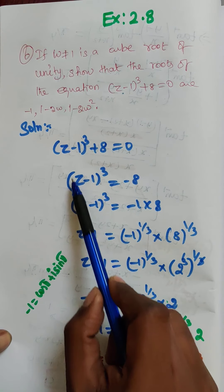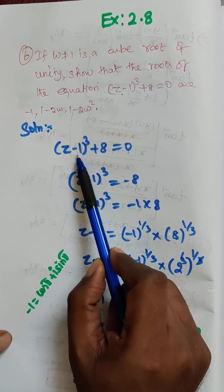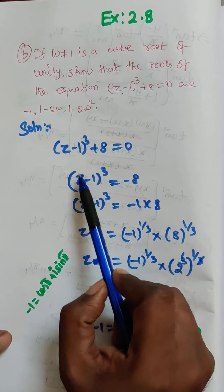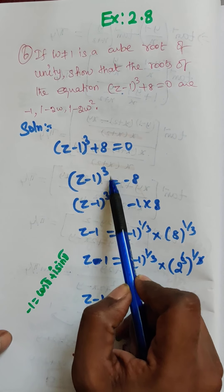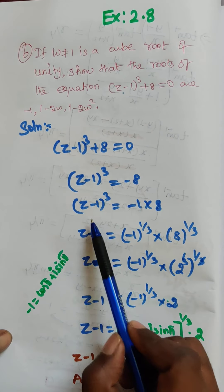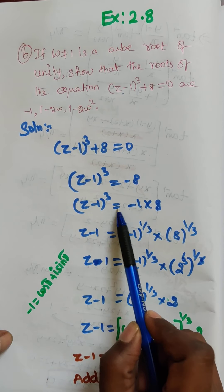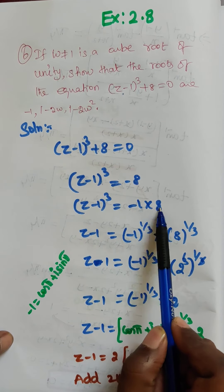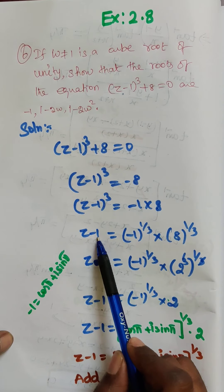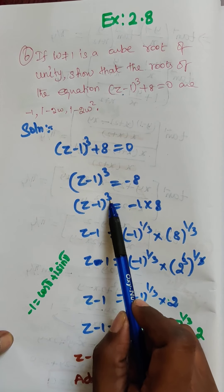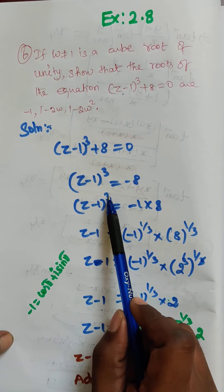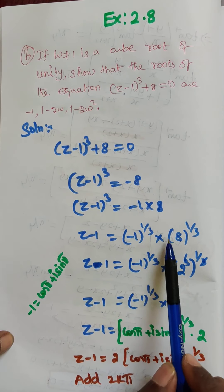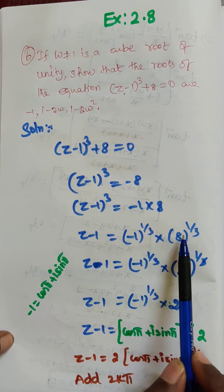So let us take the given equation: z minus 1 the whole cube plus 8 equal to 0. Now z minus 1 the whole cube is equal to minus 8. We can write minus 8 as minus 1 into 8. So z minus 1 is equal to — taking this cube to the right-hand side — minus 1 to the power 1 by 3 into 8 to the power 1 by 3.